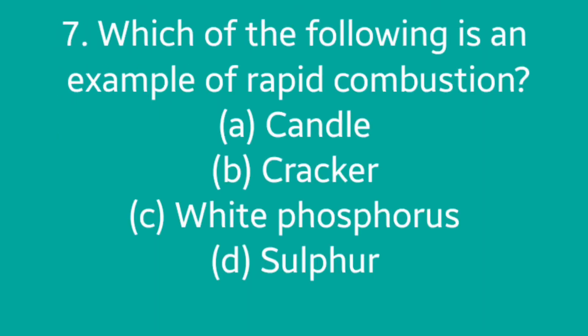Question number 7: Which of the following is an example of rapid combustion? Options: Candle, Cracker, White Phosphorus, Sulfur. Answer is option A: Candle.